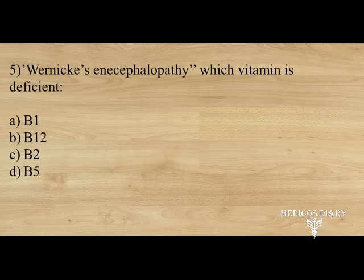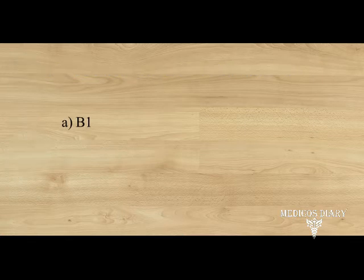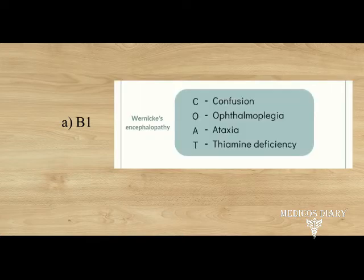Wernicke's encephalopathy — which vitamin is deficient? Option A. B1, B. B12, C. B2, D. B5. Answer: option A, B1. Wernicke's encephalopathy is due to the deficiency of thiamine, i.e. vitamin B1. It usually occurs in alcoholics and shows a triad of confusion, ophthalmoplegia, and ataxia.